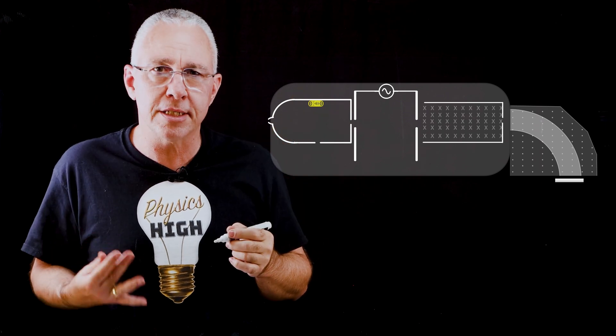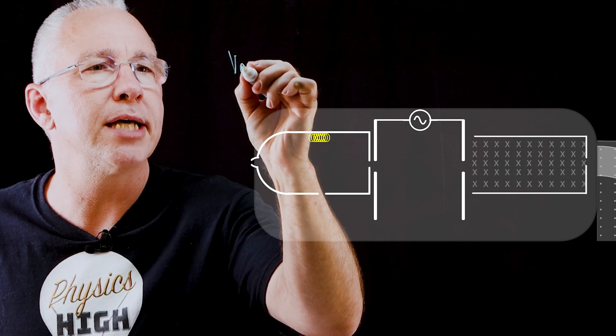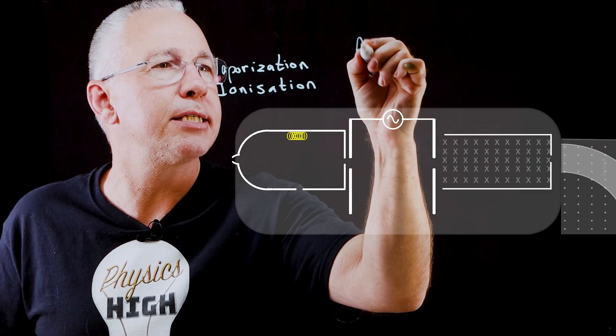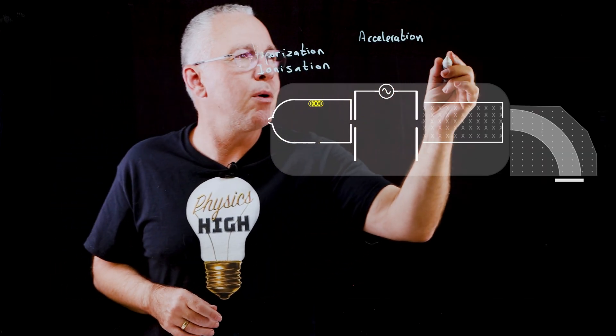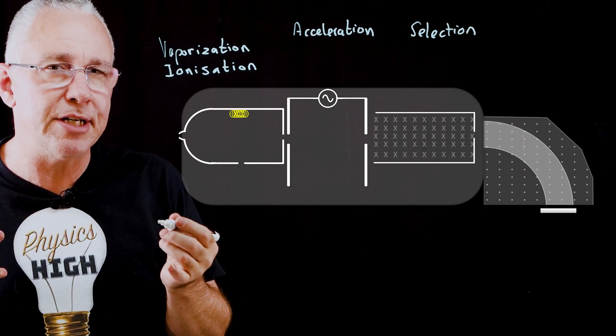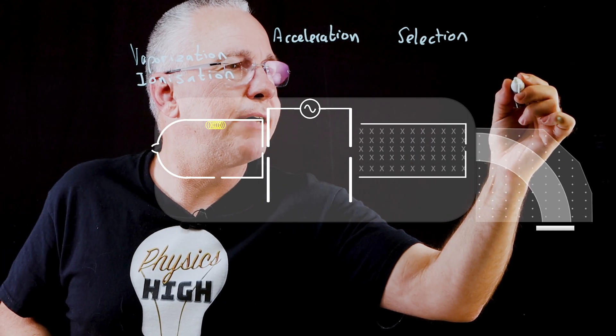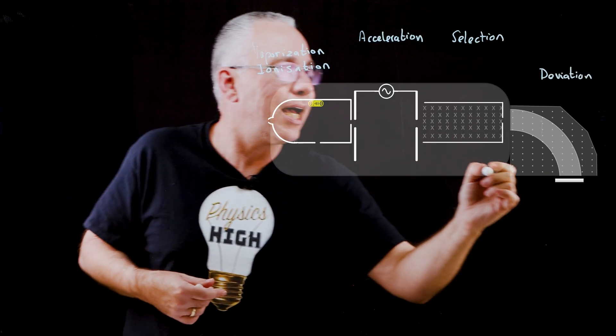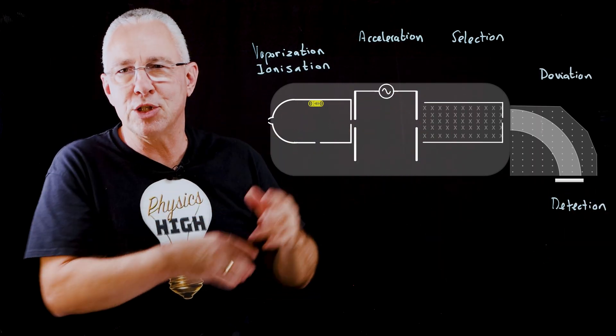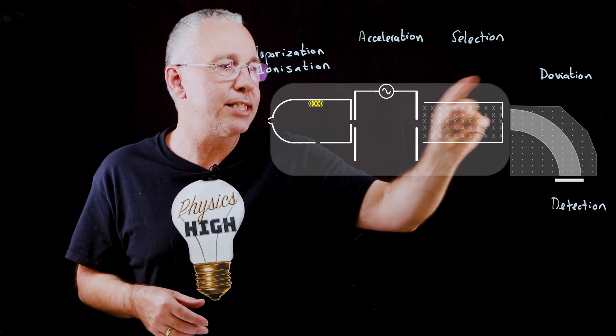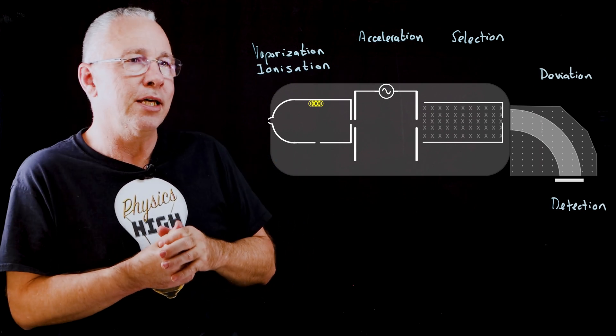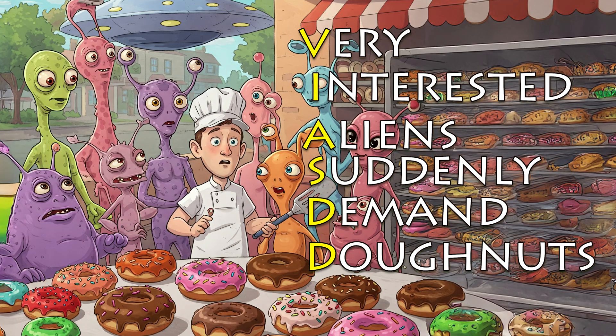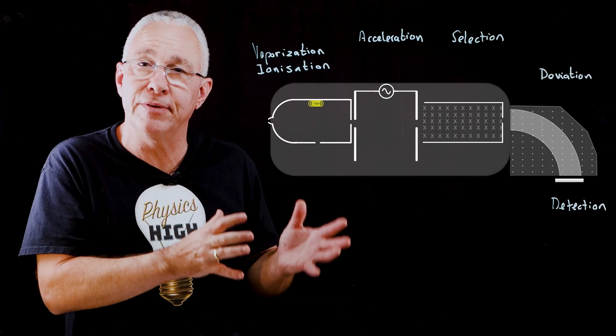We have a chamber. Two processes occur here. The first is vaporization. The second process is ionization. Now into the section where acceleration takes place. Those particles continue on. And now what we have is a selection process where we are selecting a very specific velocity. In this fourth section, we have our deviation. Charged particles turn in a circular path where eventually they will be detected at the detector. So we have detection. Now you can remember those words by using the letters V-I-A-S-D-D. And what I've come up with is: very interested aliens suddenly demand donuts.